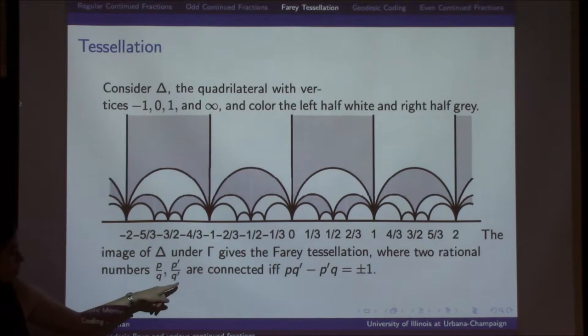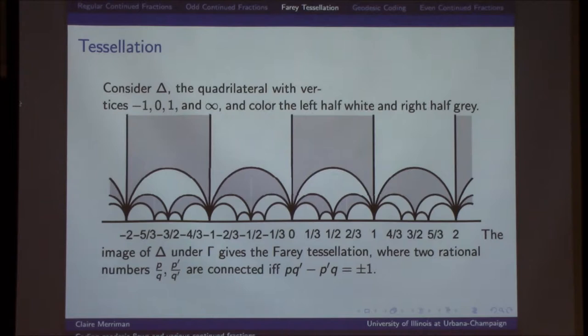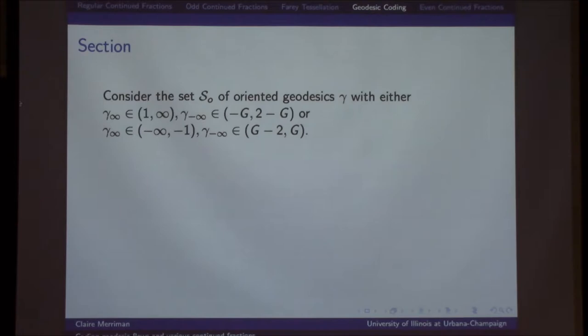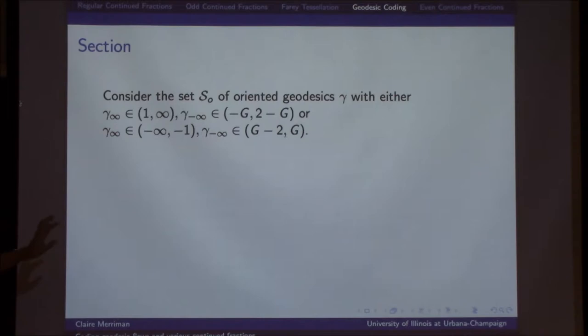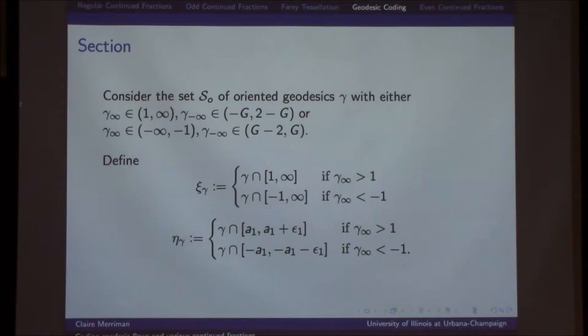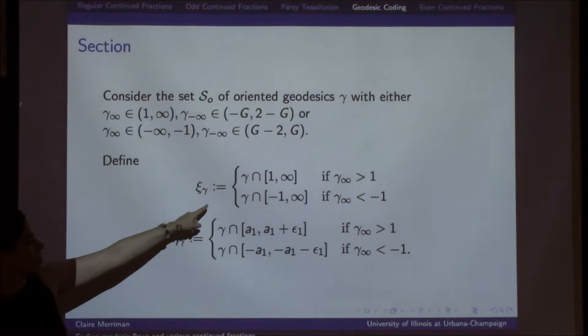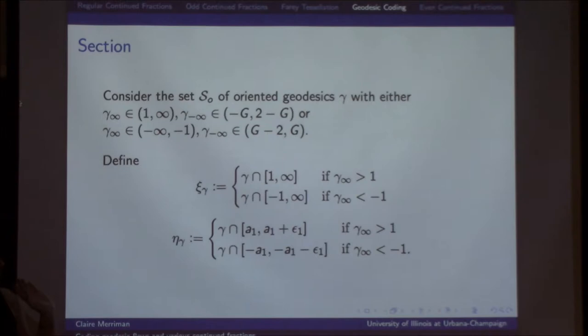We apply a checkerboard coloring — starting with white and gray alternating — and we get, with coloring, the Farey tessellation. This is where two rational numbers are connected if the determinant condition is plus or minus 1. We need to find a section: we consider oriented geodesics on this upper half plane with this tessellation. Either the forward endpoint is between 1 and infinity and the backward endpoint is between −G and 2−G, or we flip that across the imaginary axis.